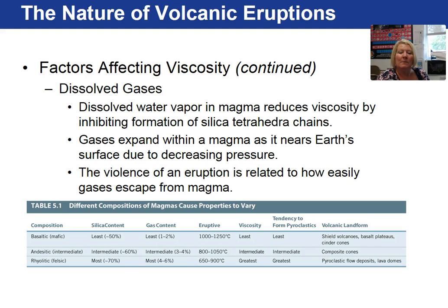As magma nears the Earth's surface, the gases will expand because of lower pressure. The violence of an eruption is related to how easily the gases can escape from magma. In a non-viscous magma, the gases are easily able to escape, whereas in a viscous material, the gases get trapped, build up pressure, until they violently explode.